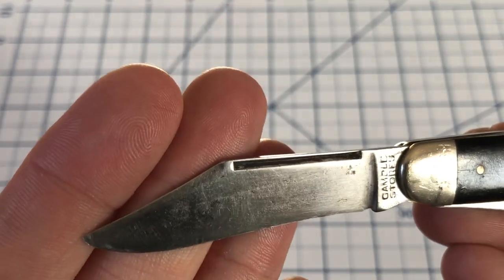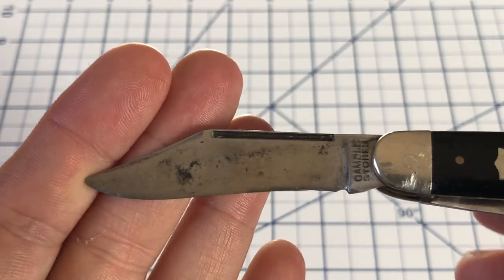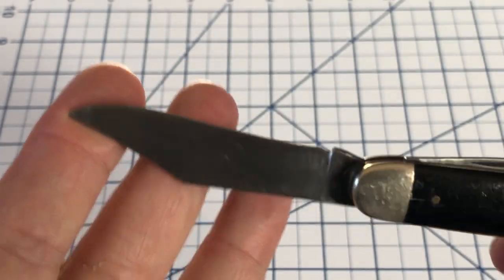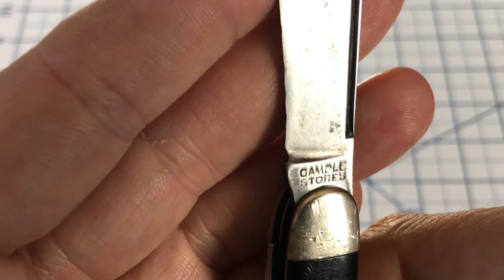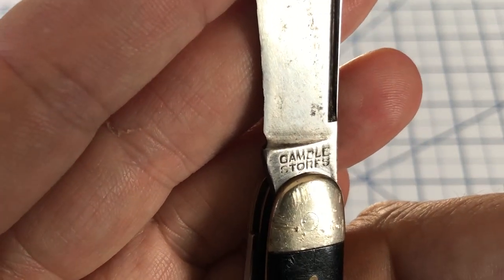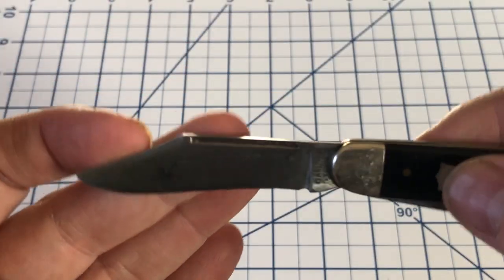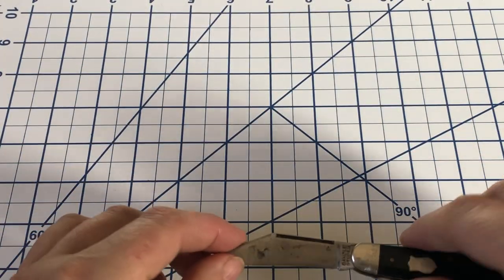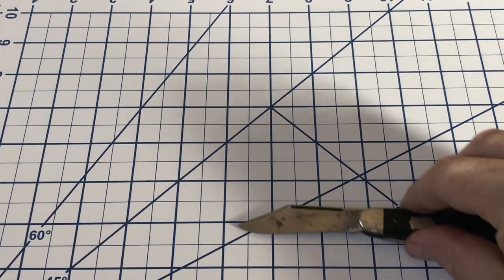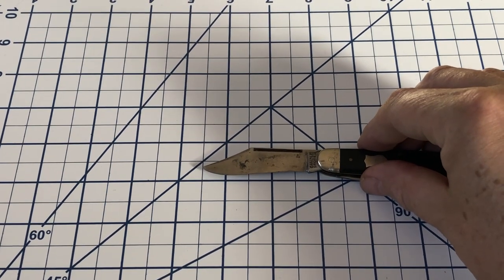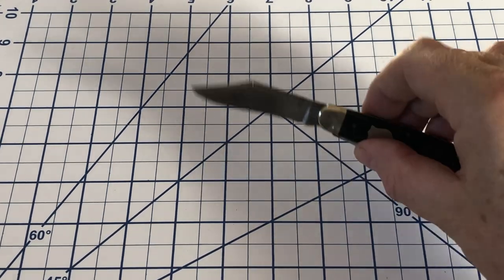The main blade is a clip point. It's got a long pull on it. Carbon steel. And you can see the tang stamp. It says, Gamble stores.